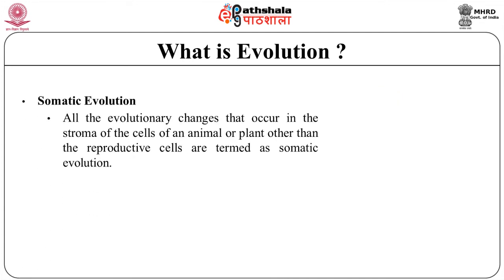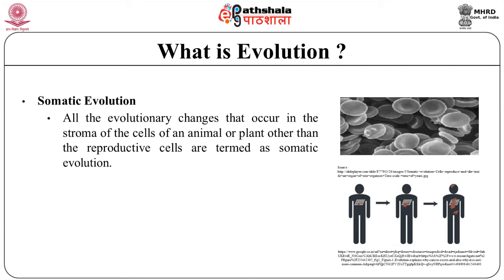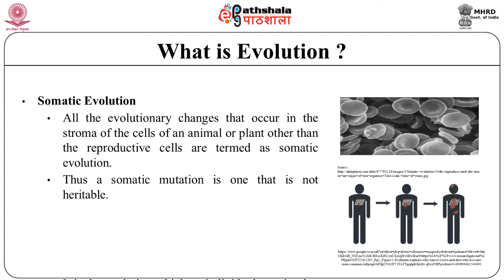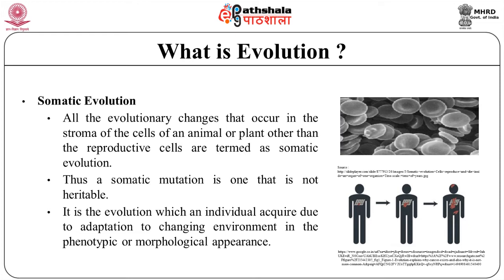Let's understand the concept of somatic evolution. All evolutionary changes that occur in the stroma of the cells of an animal or plant other than the reproductive cells are termed somatic evolution. A somatic mutation is one that is not heritable from one generation to another. It is the evolution which an individual acquires due to adaptation to a changing environment in the phenotypic or morphological appearances. The study of these somatically adapted structures sometimes directs the selection process and results in evolution.